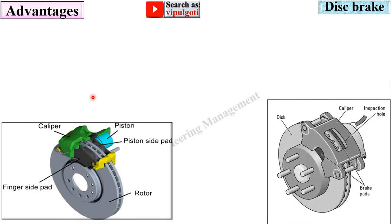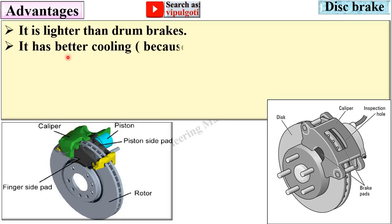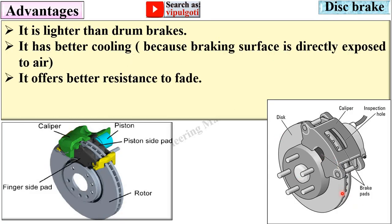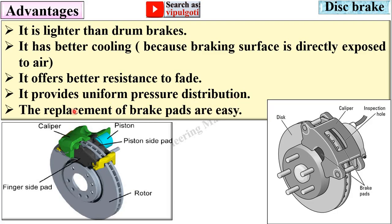Now the advantages of the disc brake. It is lighter than drum brakes. It has better cooling because the braking surface is directly exposed to the air. It offers better resistance to brake fade and provides uniform pressure distribution. The replacement of brake pads is easy.